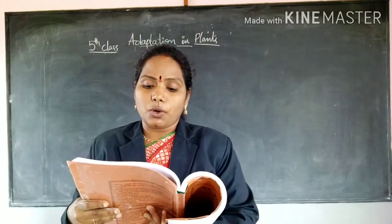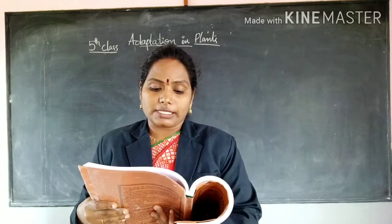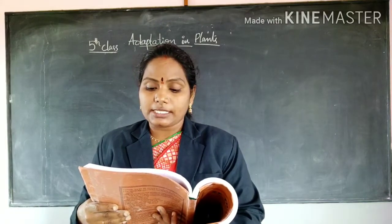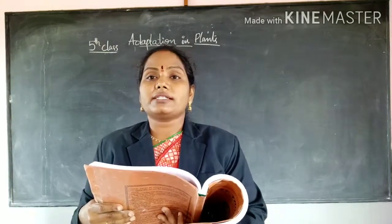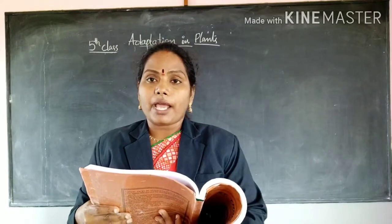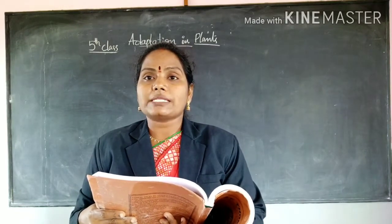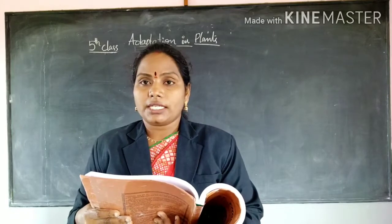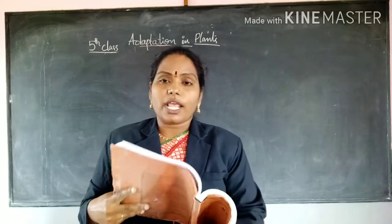Fifth question: mangroves are plants that grow in — options are: desert areas, hilly areas, or marshy areas. We have already discussed that mangroves grow in sticky, marshy areas. So the answer is marshy areas — option three. That completes Part A.